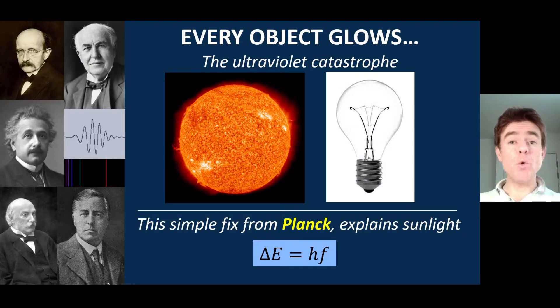This video is really all about Planck's constant and how Planck introduced this mathematical expression, which is very simple, in order to explain the amount of radiation being emitted from the sun or indeed from everyday objects such as this old light bulb. So let's take a look at what is going on here.